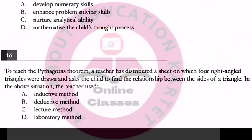Next question: To teach the Pythagoras theorem, a teacher distributed a sheet on which four right-angled triangles were drawn and asked the child to find the relationship between the sides of a triangle. In the above situation, the teacher used which method — inductive, deductive, lecture, or laboratory? The answer is option A — the inductive method.